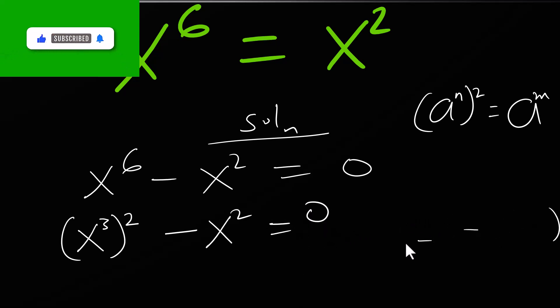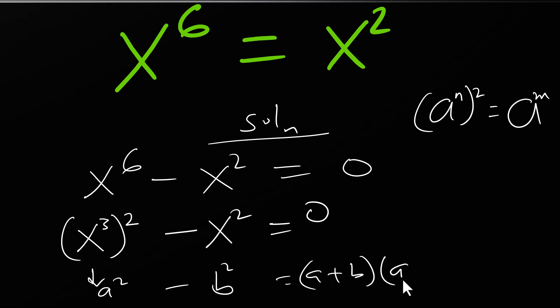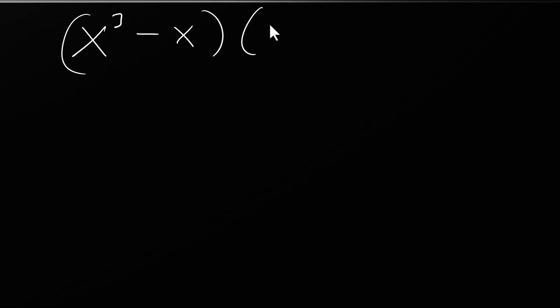Remember that this is a difference of two squares — this side is a squared and this side is b squared, giving us (a plus b)(a minus b). To avoid confusion, let's call x cubed as a and x as b. So the next step will be (x cubed plus x)(x cubed minus x) equals zero.